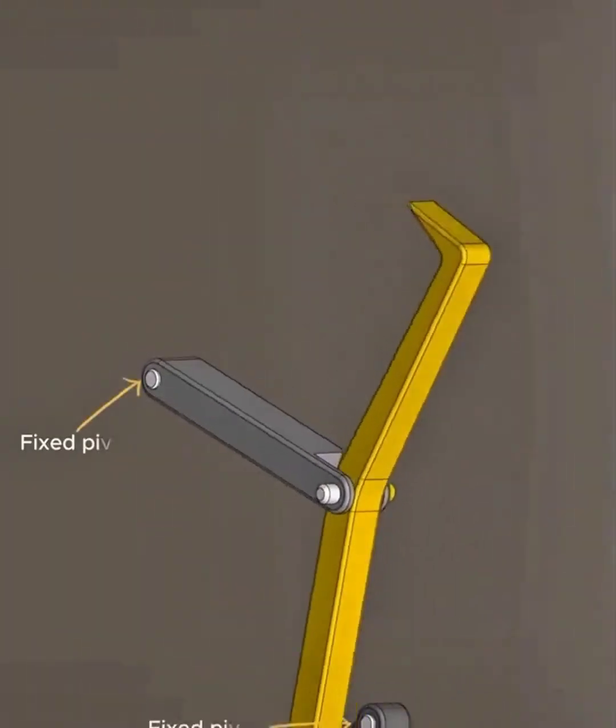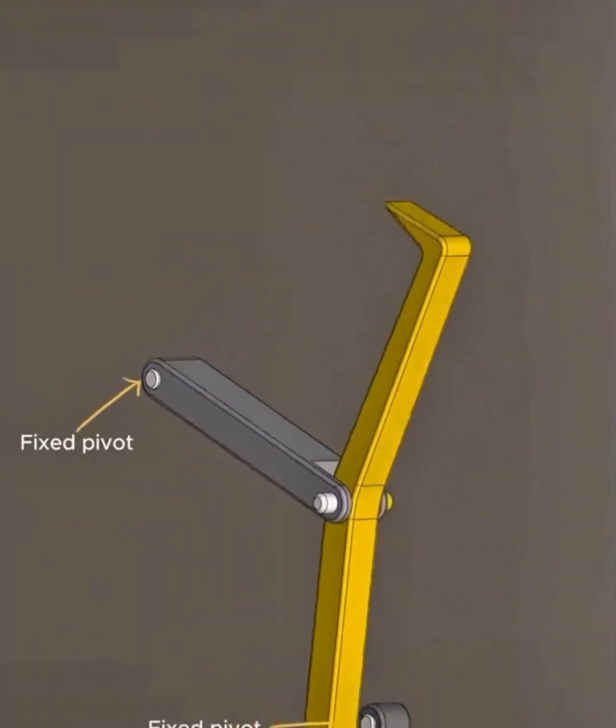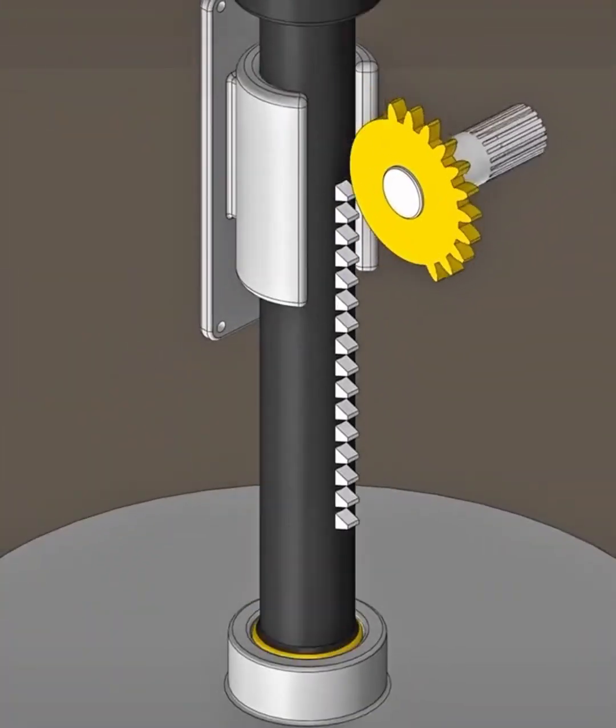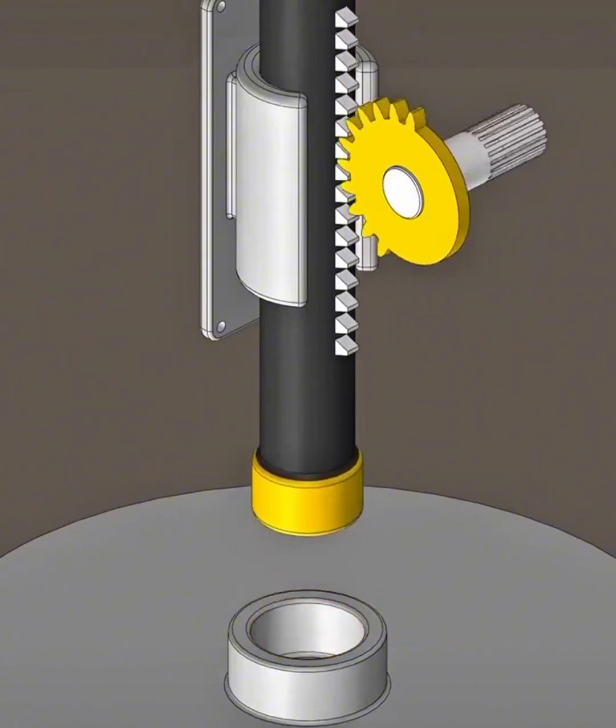This is the principle of the crank rocker and slider linkage. What is the principle of this mechanism?